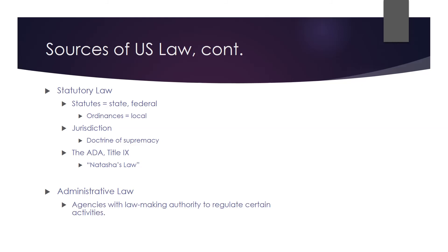Administrative law involves government agencies that have the ability to make rules with the effect of laws — Congress has delegated some of its lawmaking ability to these agencies. The NLRB — National Labor Relations Board — supervises union representation, determines whether union elections will be held, and oversees unions. In professional sports, the NLRB comes up in collective bargaining agreements and strikes. The most recent baseball strike from the mid-1990s saw the NLRB step in and force both parties back to the table.